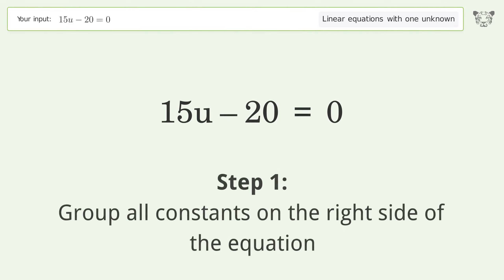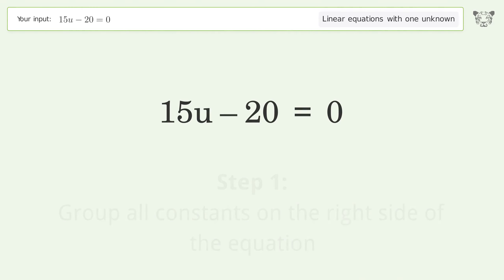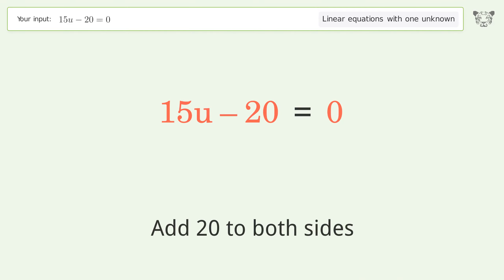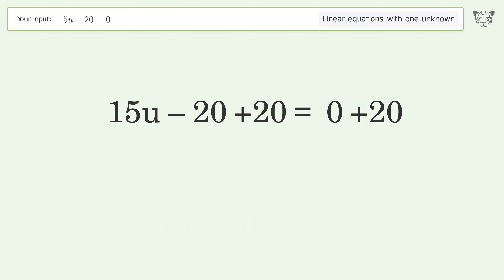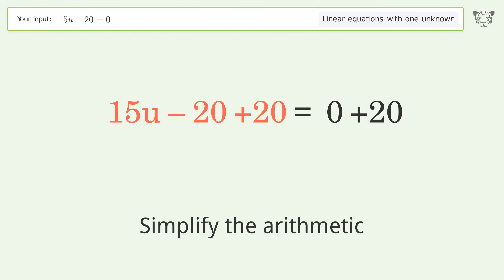Group all constants on the right side of the equation. Add 20 to both sides. Simplify the arithmetic.